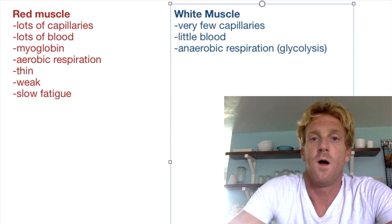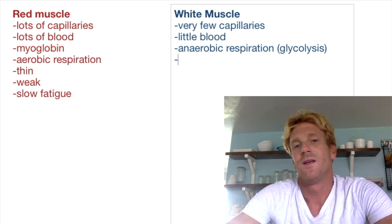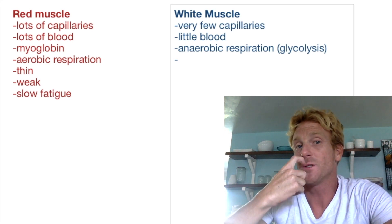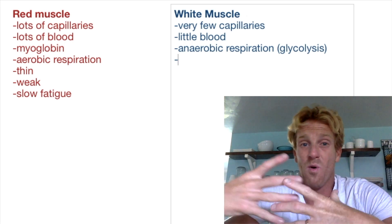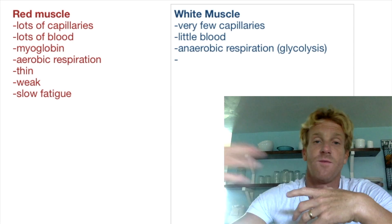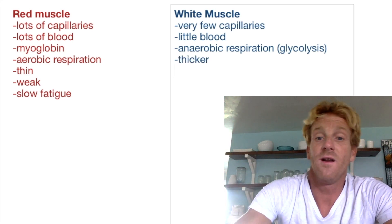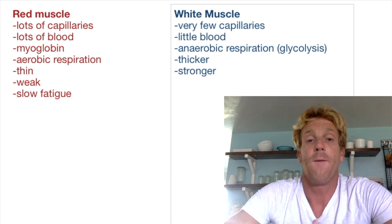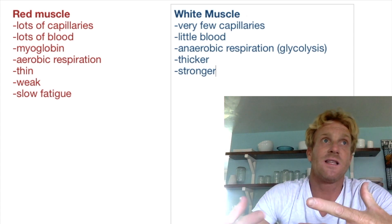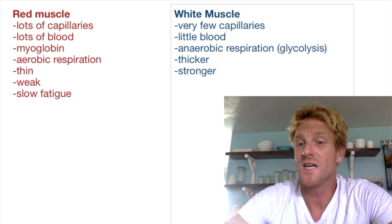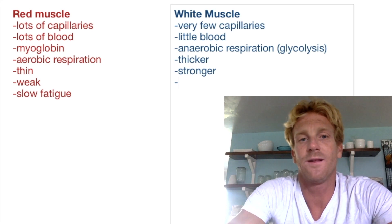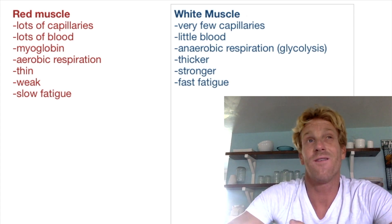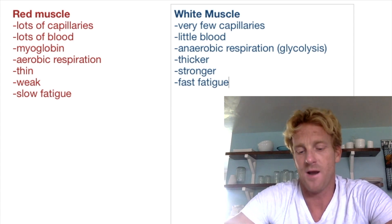Since oxygen doesn't have to diffuse all the way from the outside of the fiber to the inside where all the myofibrils are, white muscle fibers can be much thicker. Since they're much thicker, they're going to be a lot stronger. Large muscles like your gluteus maximus contain a lot of these white muscle fibers. They're thicker, stronger, but less efficient, and they tire very quickly — they're fast to fatigue because glycolysis and anaerobic respiration is not very efficient.